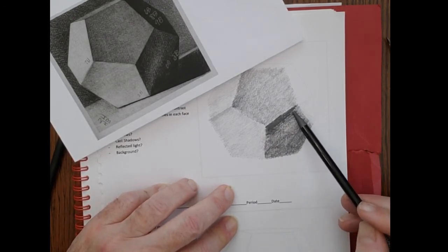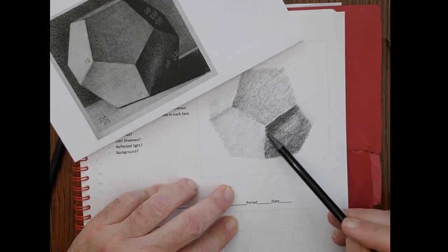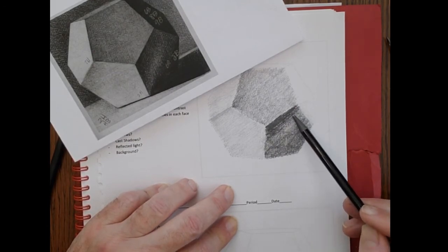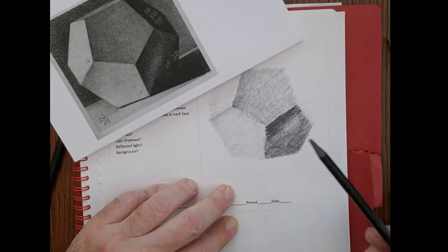Now notice on the top, it's just a little bit that's almost black and then it quickly fades off as the reflection kind of takes hold.